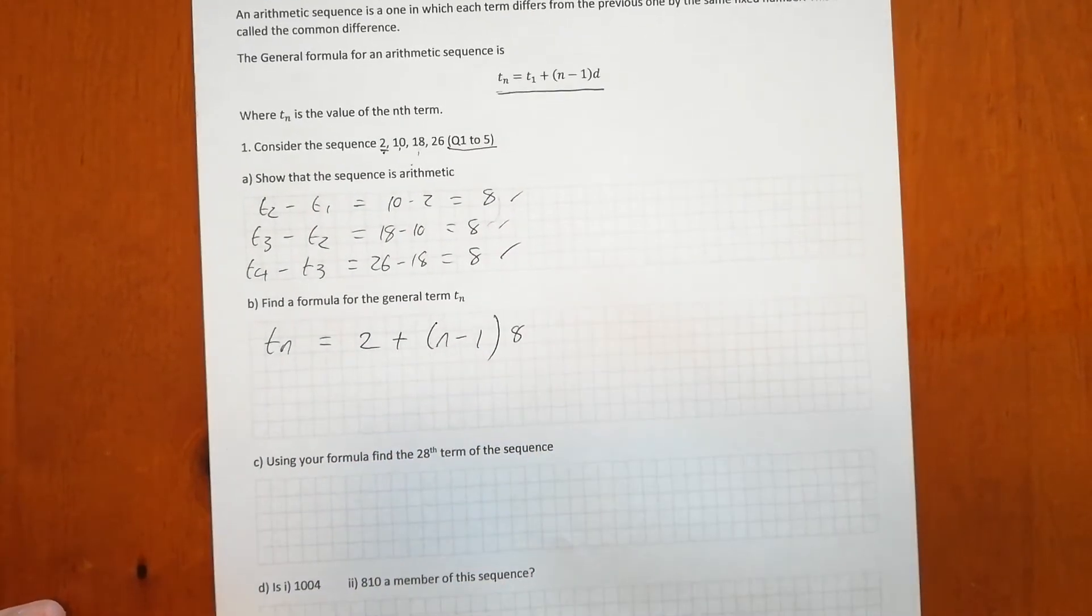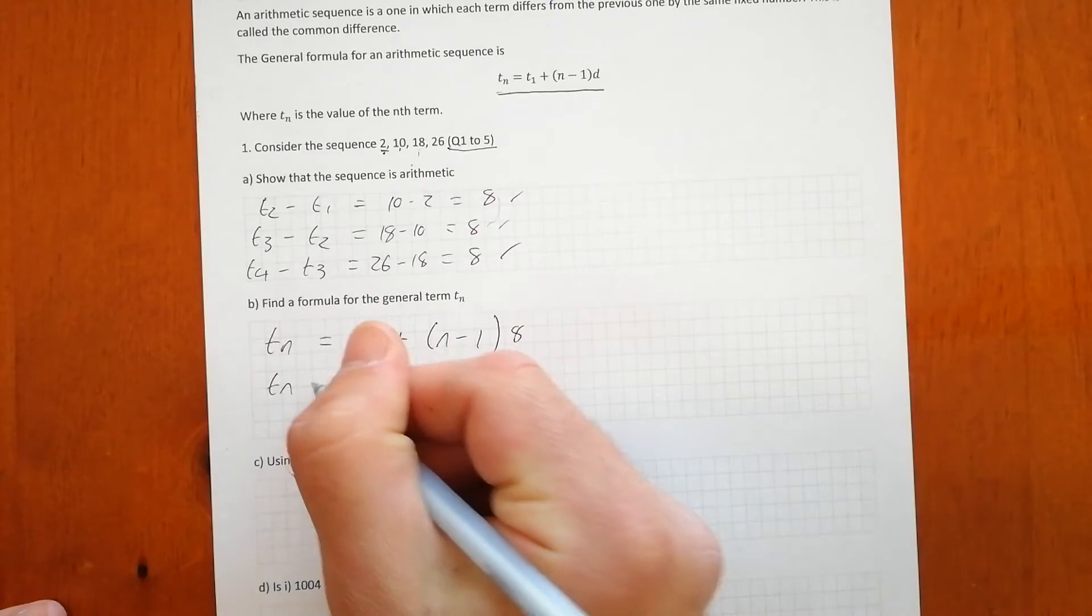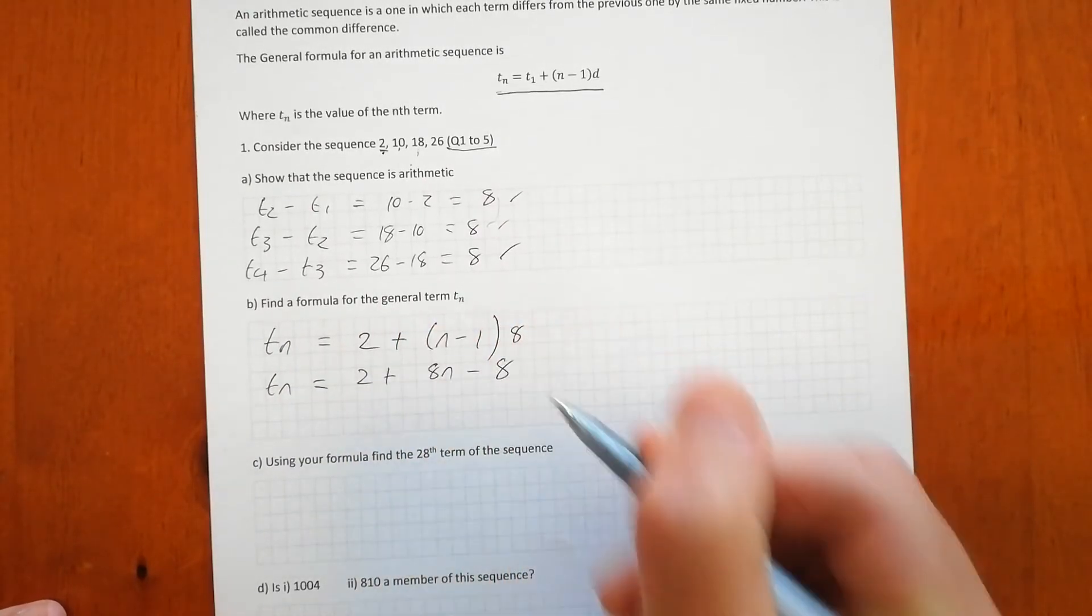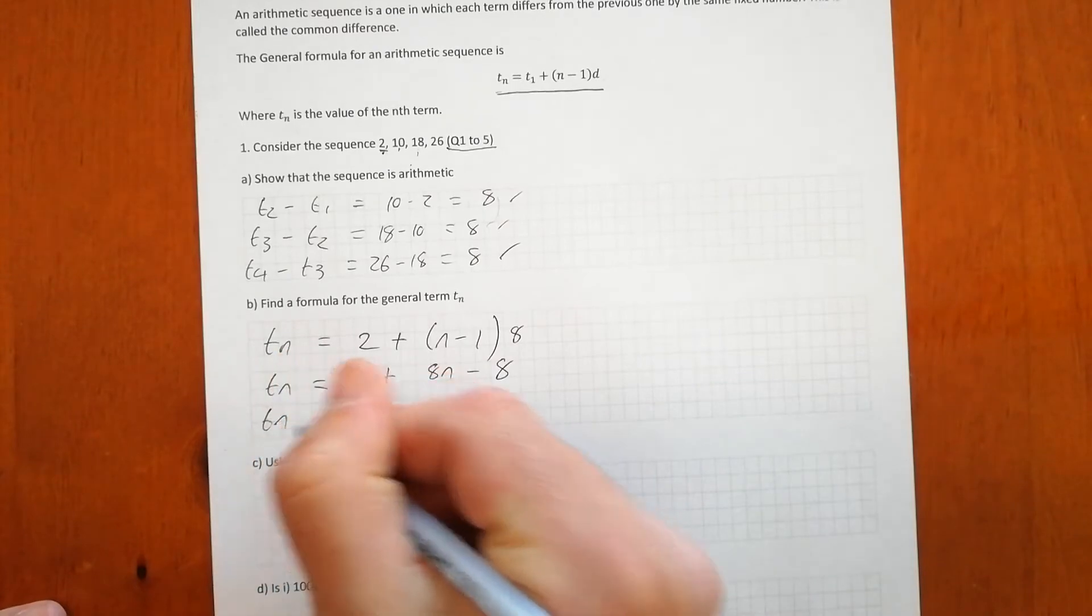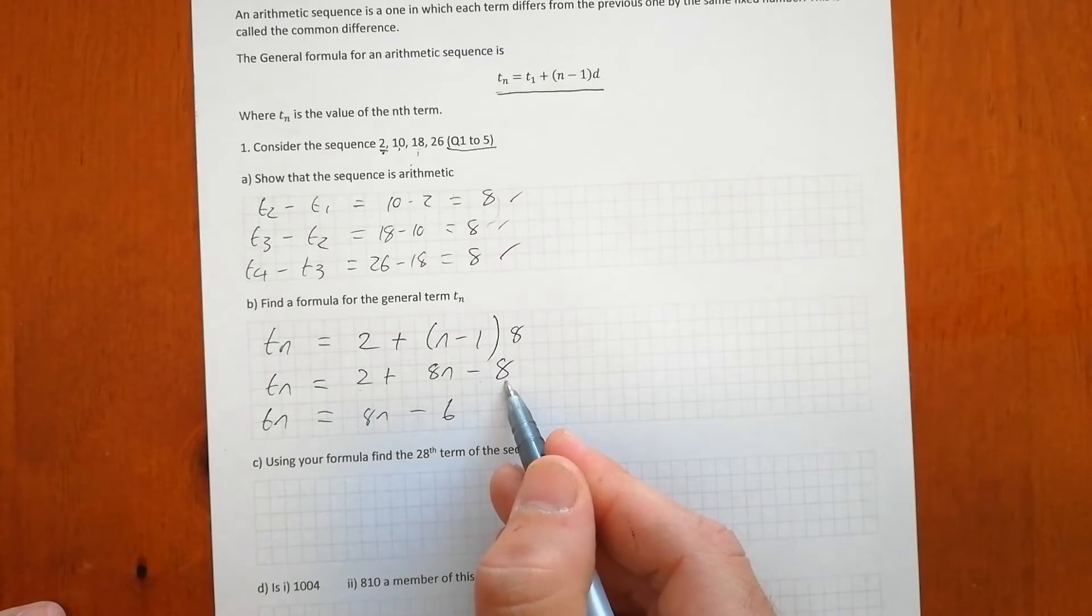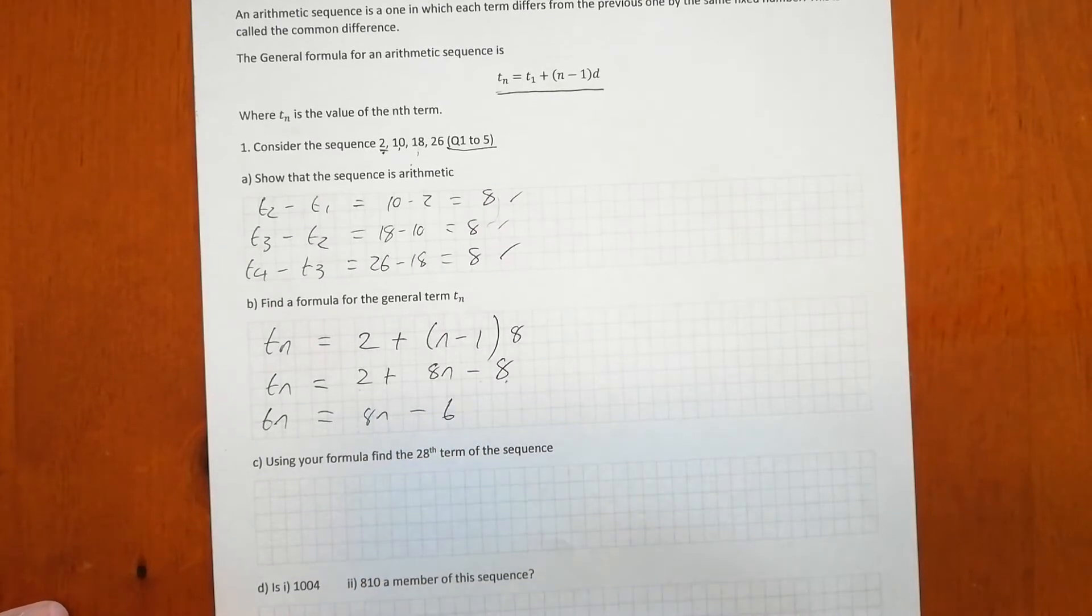And we're just going to expand this and collect the like terms. So we've got the nth term is going to be 2 plus 8n take 8. And when we collect this, we've got 8n take 6. 2 take 8 gives us 8n take 6.